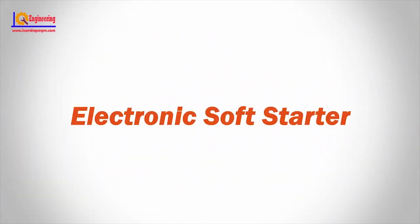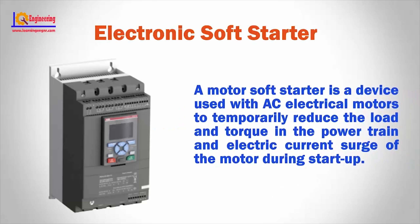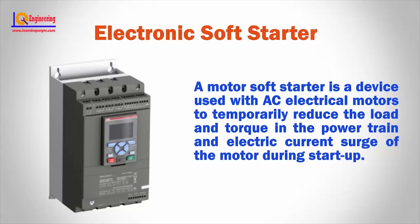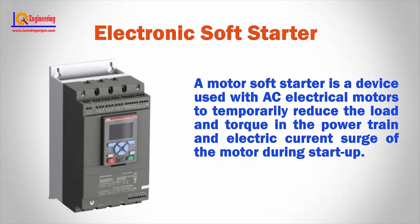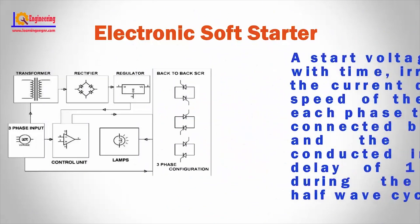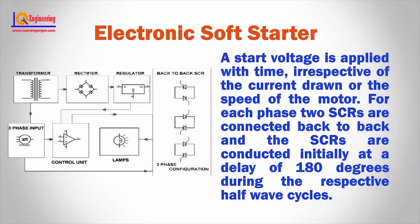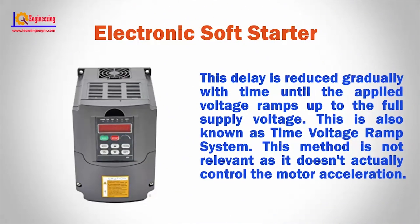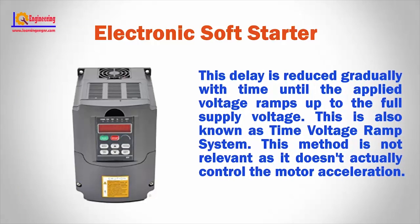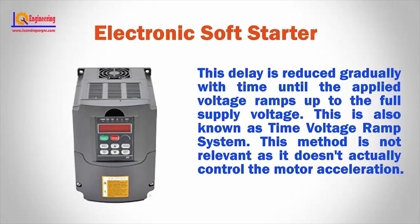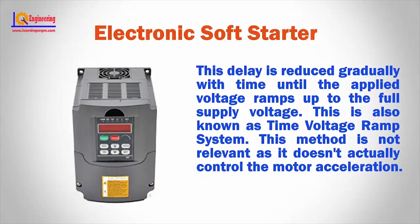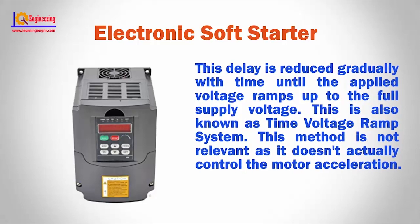Electronic soft starter. A motor soft starter is a device used with AC electrical motors to temporarily reduce the load and torque in the powertrain and electric current surge of the motor during startup. A start voltage is applied with time, irrespective of the current drawn or the speed of the motor. For each phase, two SCRs are connected back to back, and the SCRs are initially conducted at a delay of 180 degrees during the respective half-wave cycles. This delay is reduced gradually with time until the applied voltage ramps up to the full supply voltage. This is also known as the time voltage ramp system. This method is considered limited as it doesn't actually control the motor acceleration.